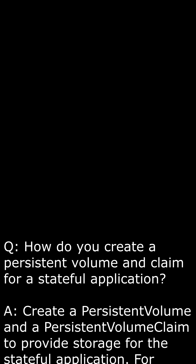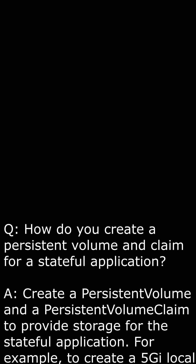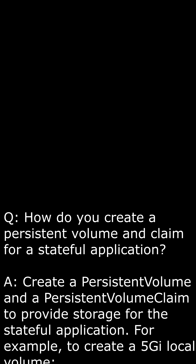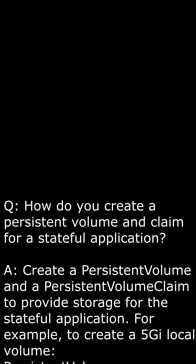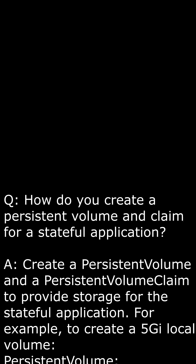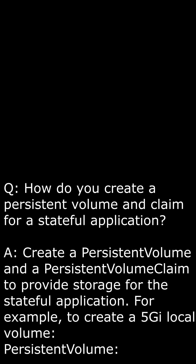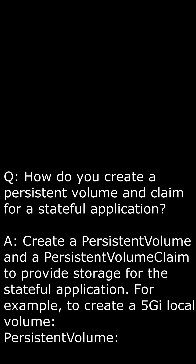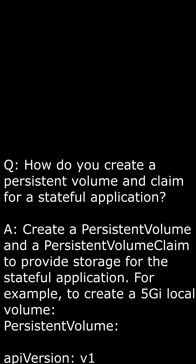API version: v1. This specifies the Kubernetes API version to use — in this case, it's the v1 API. Kind: PersistentVolume. This specifies that we're creating a persistent volume resource in Kubernetes.